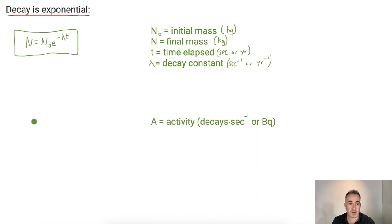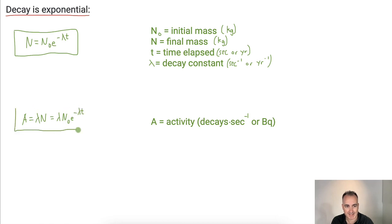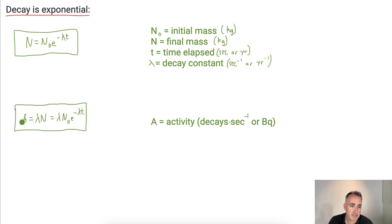We've also got activity. Activity equals lambda times N, which means activity equals lambda times N₀ e to the minus lambda t. Activity is defined as decays per second; sometimes we use the unit becquerel. So activity can be calculated from the amount — you just multiply by the decay constant.